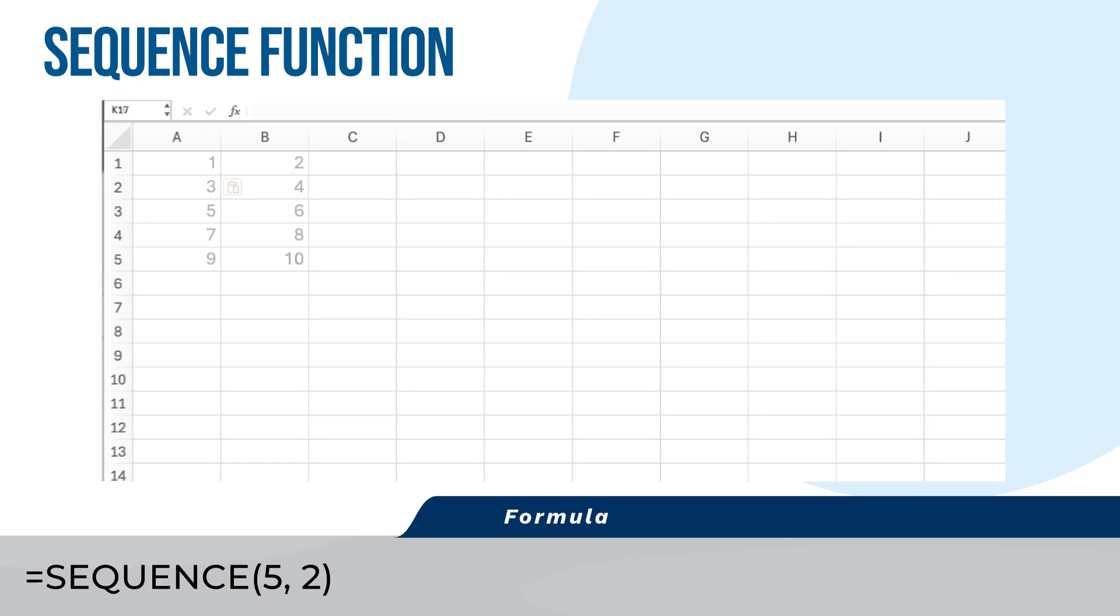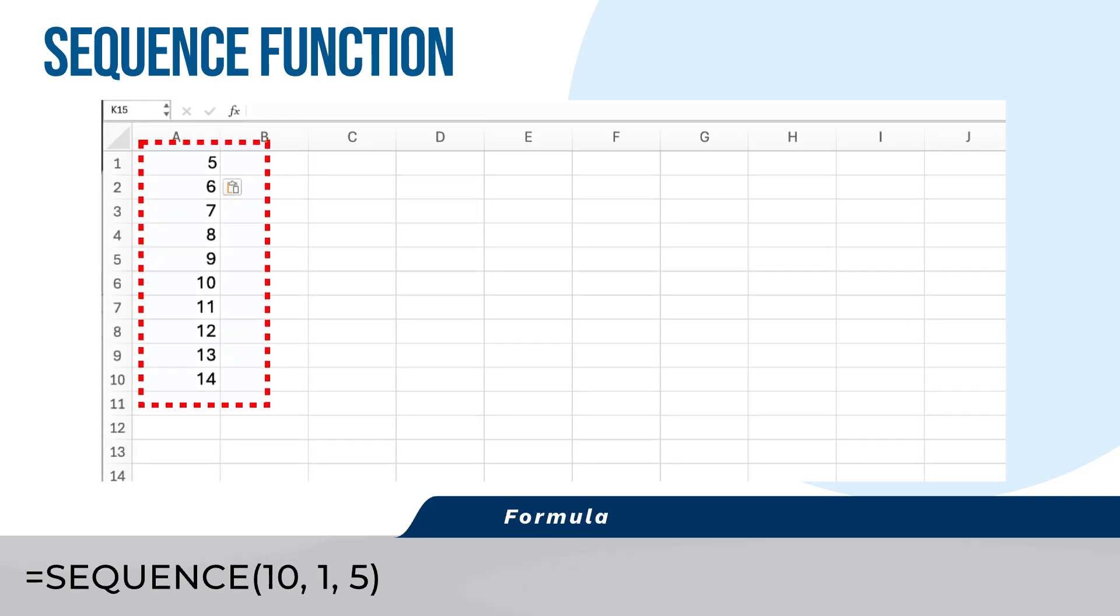Starting from a specific number, select the cell where you want the sequence to begin. Enter the formula equals Sequence 10, 1, 5 and press Enter. The result will be a sequence of numbers from 5 to 14 in column D.